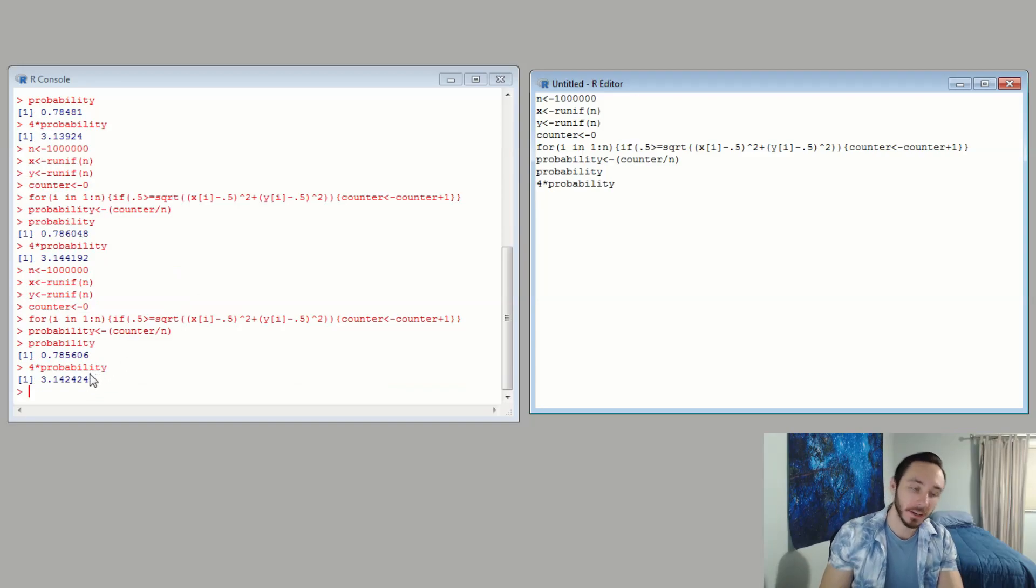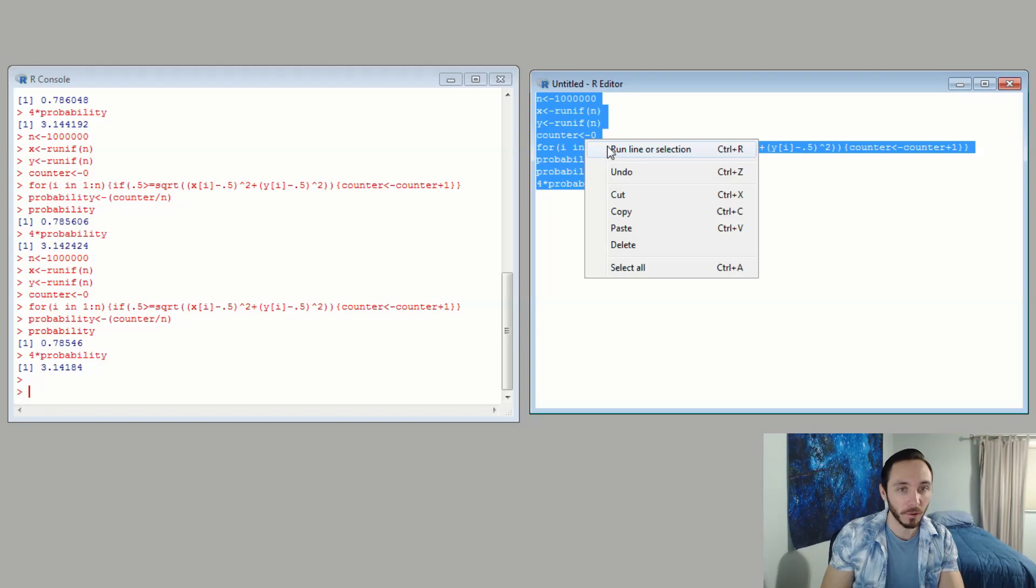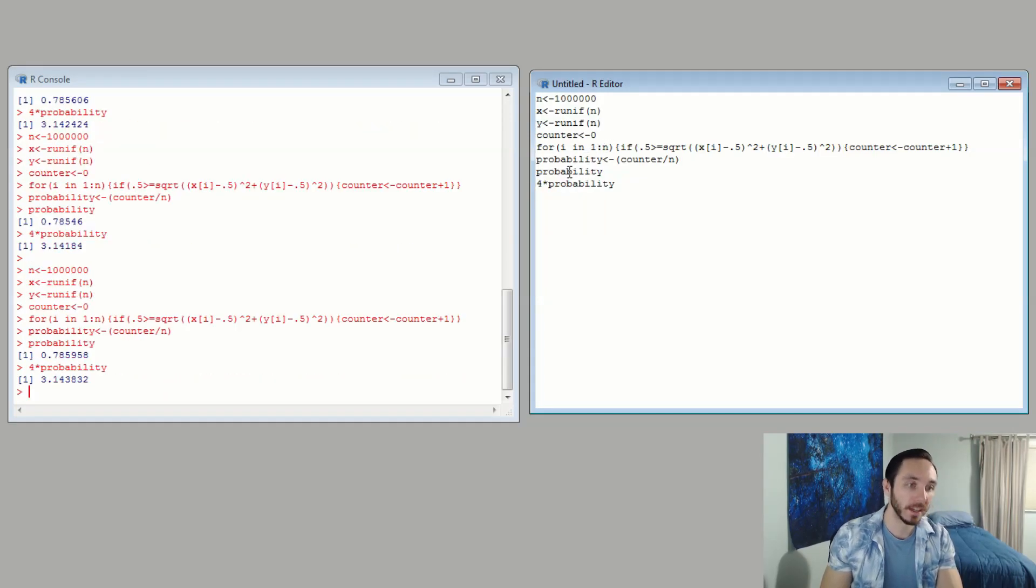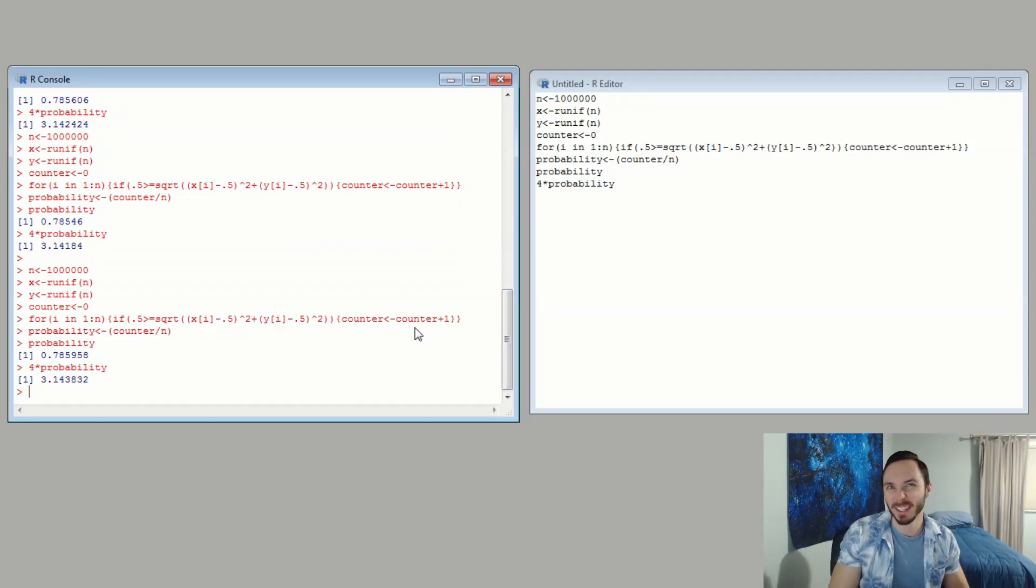I'm still not satisfied. I've got to run this a few times. I want to see something better. I'm going to run it once. 3.1424. That's pretty good. Run it again. 3.14184. That's good. Run one more time. 3.143832. It's pretty good for a million. I didn't really like seeing 3.13 because I'm already off on the second digit. This is looking a lot better. When we run it a million times, you're a lot closer to pi. Hopefully one of these ended up beating 22 over 7.